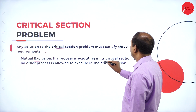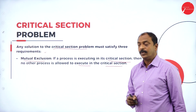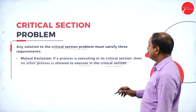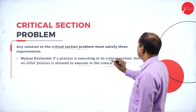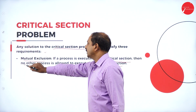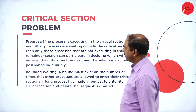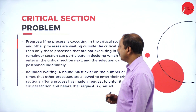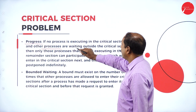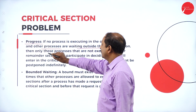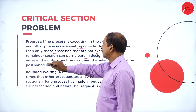Mutual exclusion: if a process is executing in its critical section, then no other process is allowed to execute in the critical section at the same time. Progress: if no process is executing in the critical section and other processes are waiting outside the critical section, then those processes that are not executing in their remainder section can participate in deciding which will enter the critical section next.